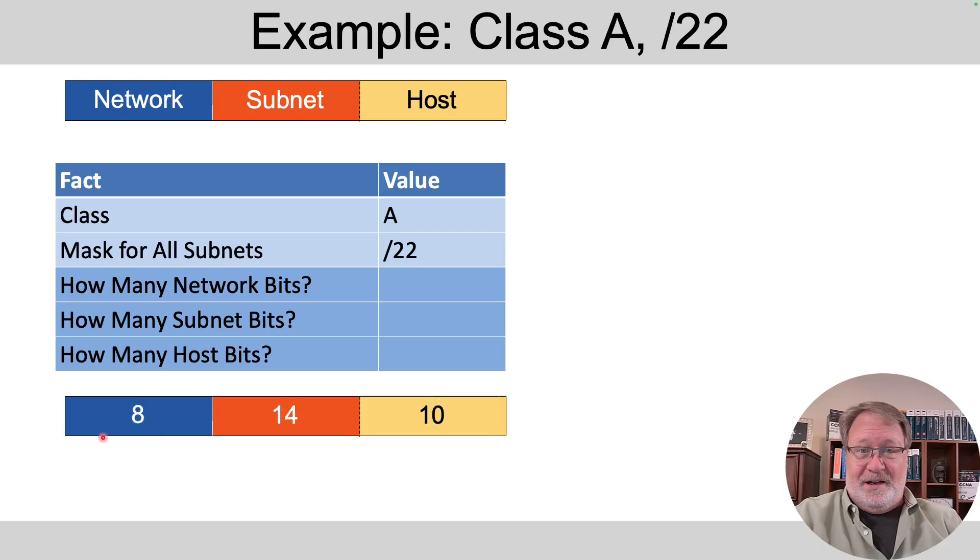So if it's class A, you've got 8 network bits by definition. And if the one mask that's chosen is slash 22, then the size of the subnet field is 14 because 8 plus 14 is 22. The host field, it's 32 minus the prefix bits, 32 minus 22 gives you 10. And also, network plus subnet plus host bits adds up to 32.